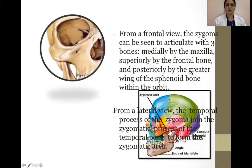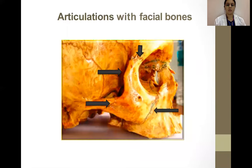From a frontal view, the zygoma can be seen to articulate with three bones: medially by the maxilla, superiorly by the frontal bone, and posteriorly by the greater wing of the sphenoid within the orbit. From a lateral view, the temporal process of the zygoma joins the zygomatic process of the temporal bone to form the zygomatic arch. This is a diagrammatic representation of the anatomy of the facial bones.